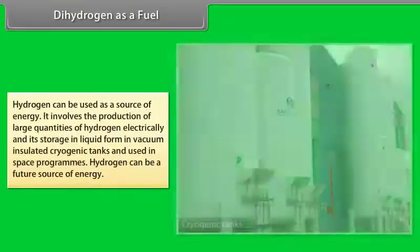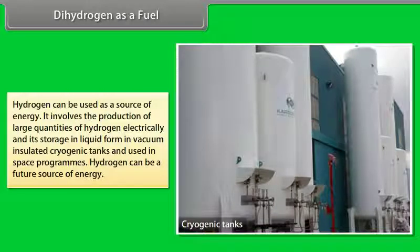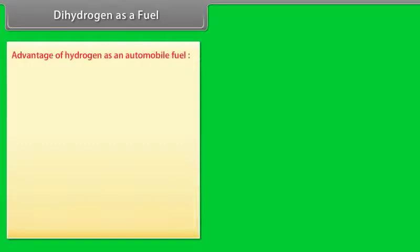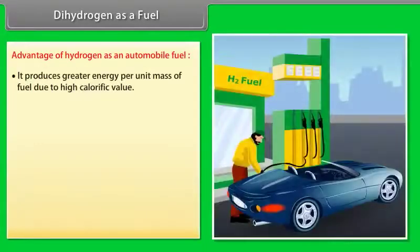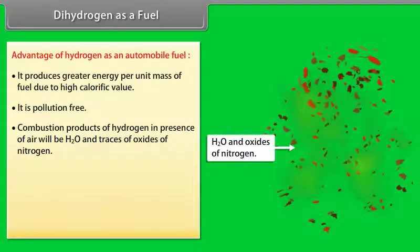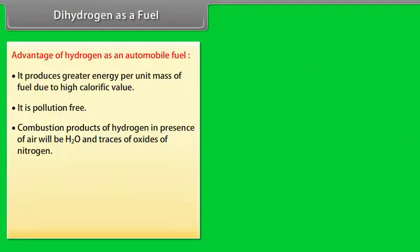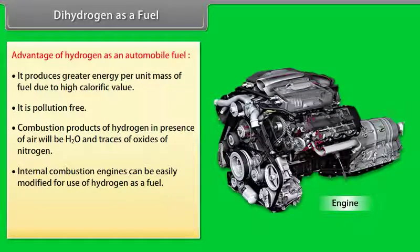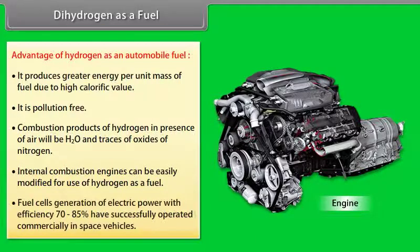Dihydrogen as a fuel: Hydrogen can be used as a source of energy. It involves the production of large quantities of hydrogen electrically and its storage in liquid form in vacuum-insulated cryogenic tanks and used in space programs. Hydrogen can be a future source of energy. Advantages as an automobile fuel: It produces greater energy per unit mass due to high calorific value. It is pollution-free. Combustion products in presence of air will be H2O and traces of oxides of nitrogen. Internal combustion engines can be easily modified for use of hydrogen as a fuel. Fuel cells generate electric power with efficiency of 70-85% and have successfully operated commercially in space vehicles.